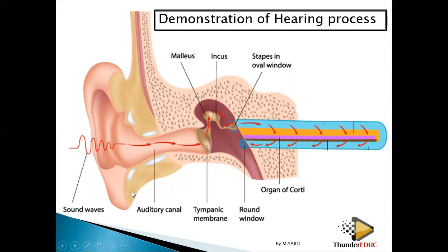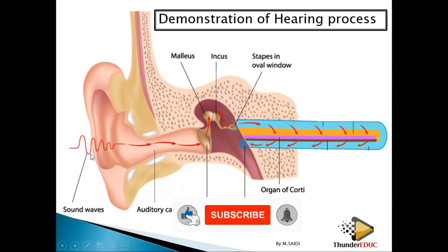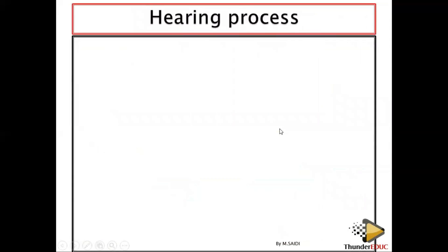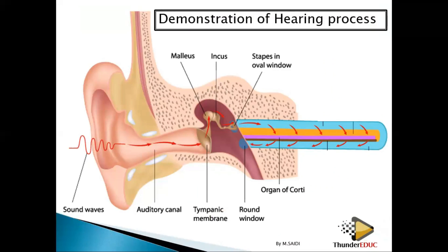Welcome back to our class. Don't forget to subscribe if it is your first time to visit our channel. Let's look at the hearing process. Before you talk about the hearing process, you need to look at how the ear receives and takes the information to the brain. Sound waves are being received by the pinna, then the pinna sends the information to the tympanic membrane via the auditory canal.